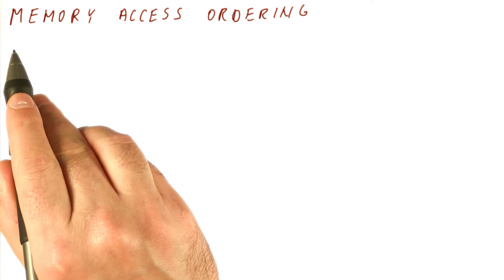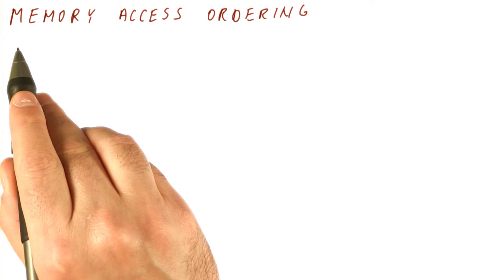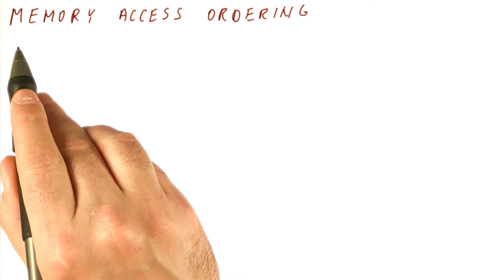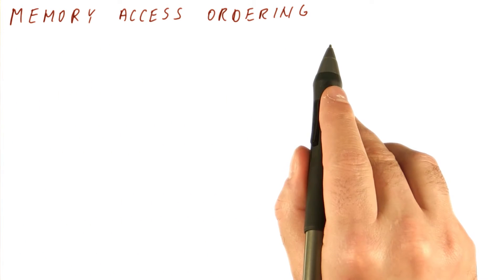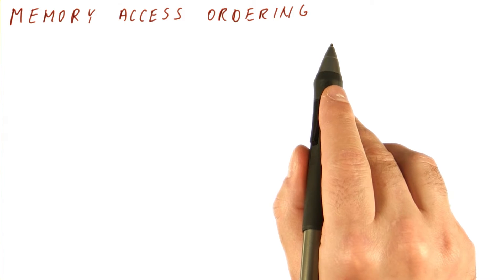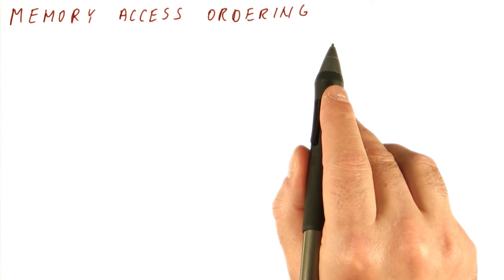We have seen that using the ROB and something like Tomasulo's algorithm, we can enforce the order of dependencies on registers between instructions. The question still remains: what about memory access ordering? We have load and store instructions. Do they really need to be done strictly in program order, or can we do something about reordering them too?